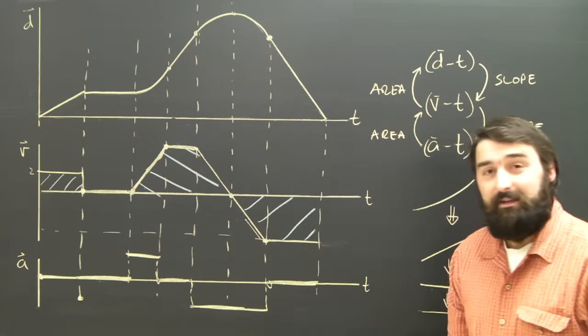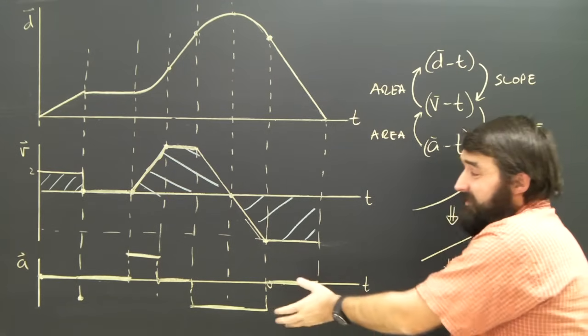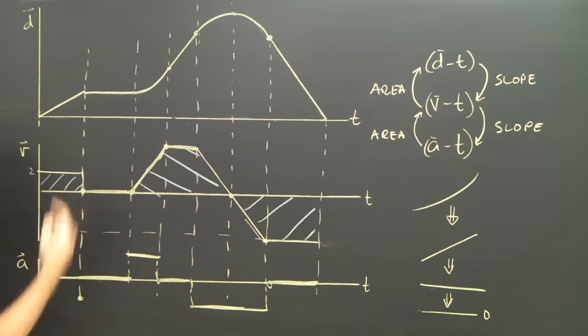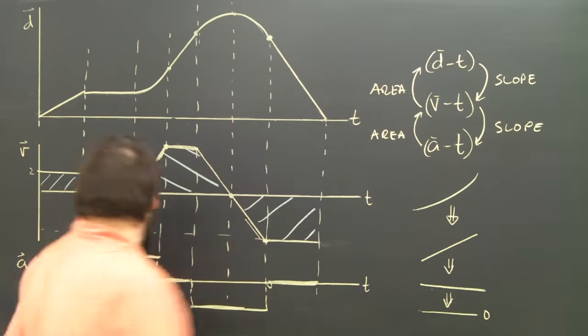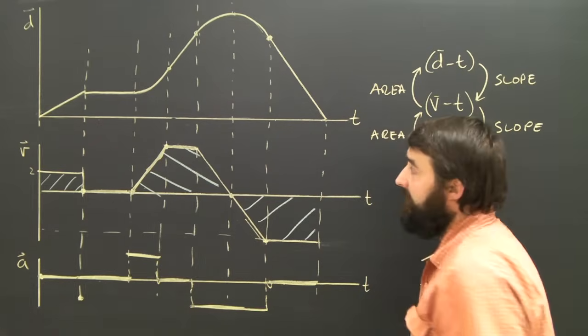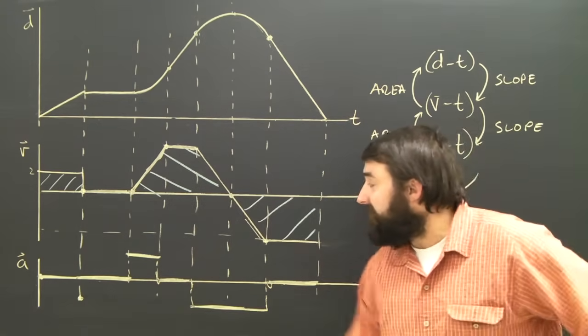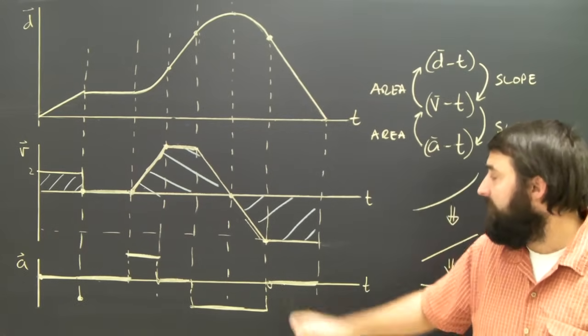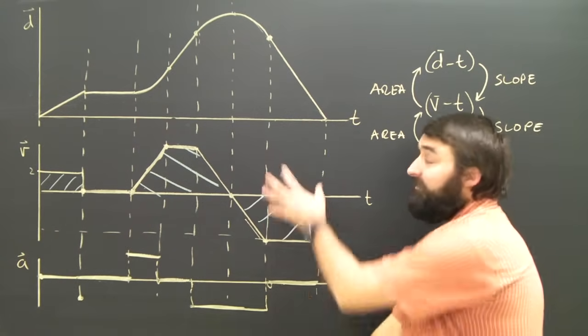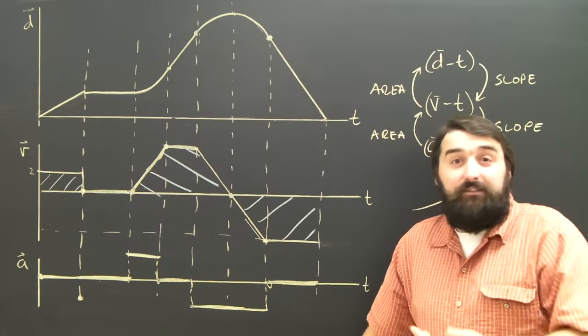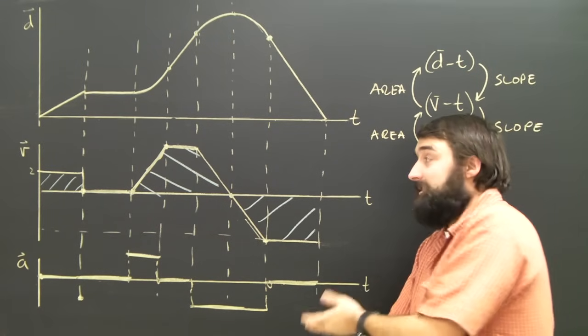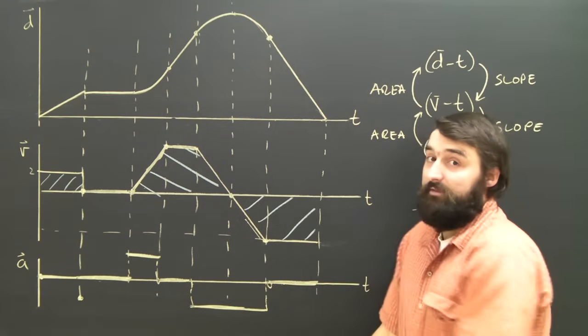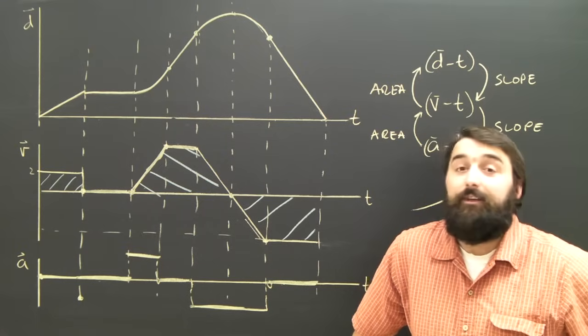And the AT graph should say the same thing, but it has a little less information even. Look, the AT graph just says this thing wasn't accelerating for the first two sections. Well, that's true. It's just not very specific. Then the AT graph says it was accelerating in the positive direction for a little while. We already said that. Then it stopped accelerating. Then it accelerated in the negative direction for a while. And then it stopped accelerating again. So the AT graph describes the motion as well, but it doesn't give us as much information. And that's going to be important when we try to go the other way. To take an AT graph and turn it into a VT graph, which I believe is in the next video.